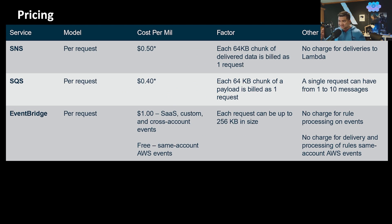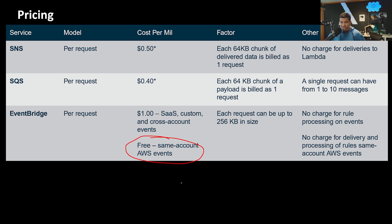Pricing differs slightly as well: SNS and SQS are a little cheaper but are priced based on 64 KB chunks of data, whereas EventBridge is priced based on 256 KB chunks. For EventBridge event types: AWS service events within the same account - such as creating, stopping, or terminating EC2 instances - are free. SaaS third-party partner events from services like Zendesk and Datadog, custom business events, and cross-account events have associated costs.